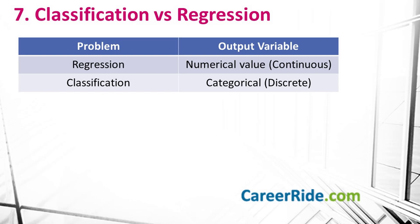What is the difference between classification and regression in machine learning? To solve a prediction problem correctly, it is very important to understand whether it is a classification or regression problem. The biggest difference is that the output variable in regression is numerical or continuous, while in classification it is categorical or discrete. So regression is the task of predicting a continuous quantity, while classification is the task of predicting a discrete class label.